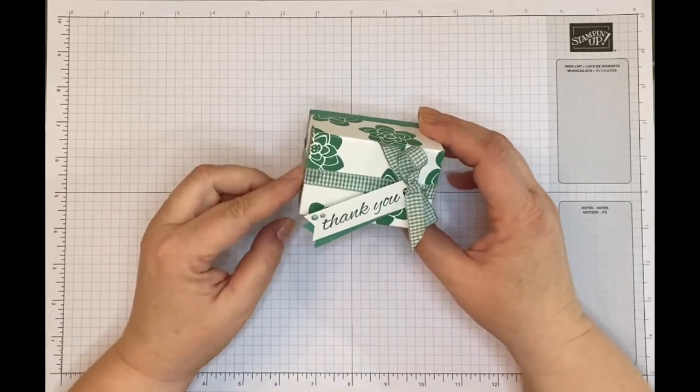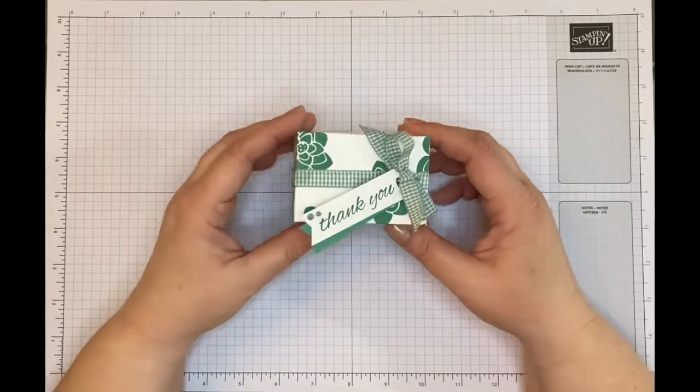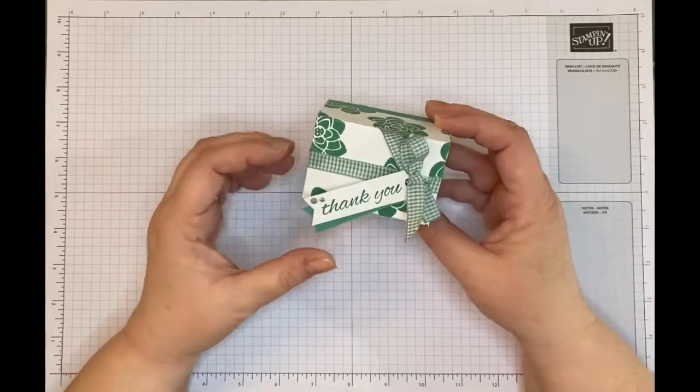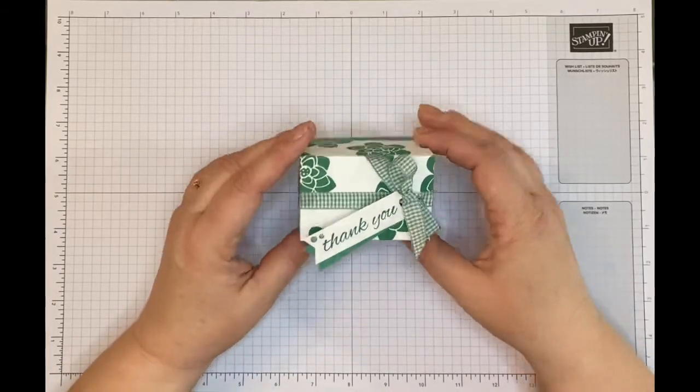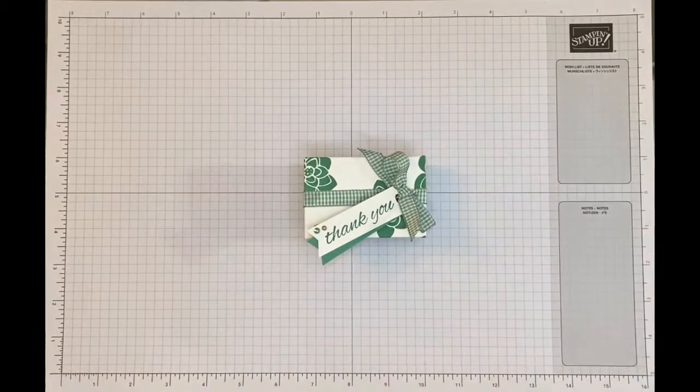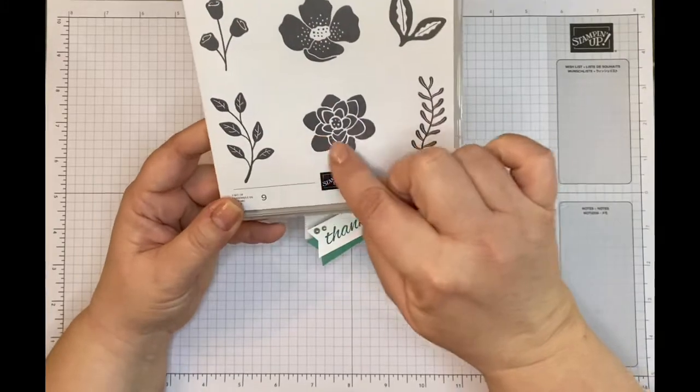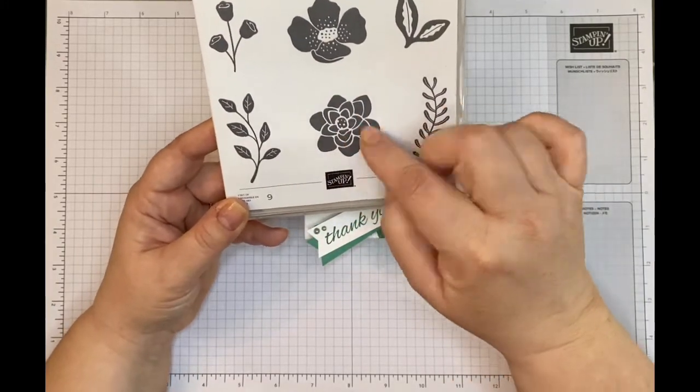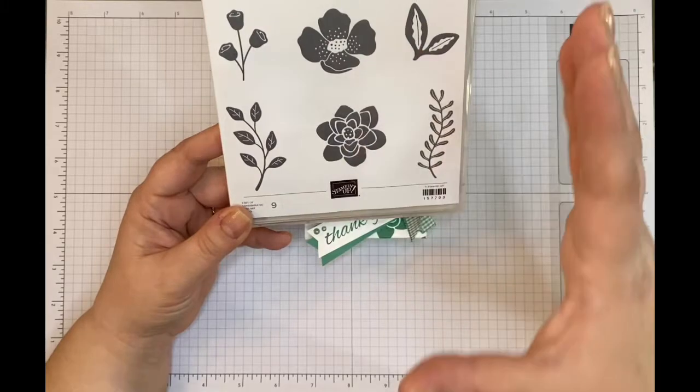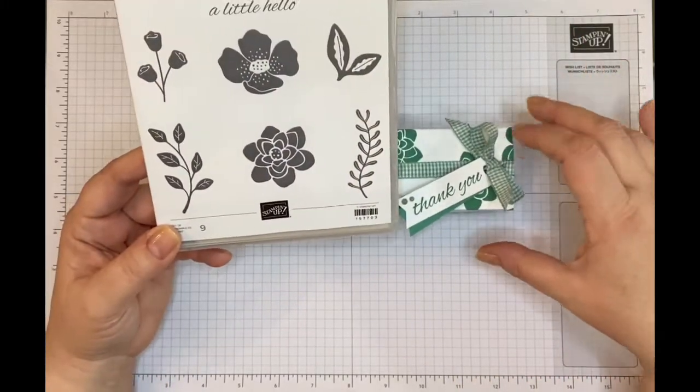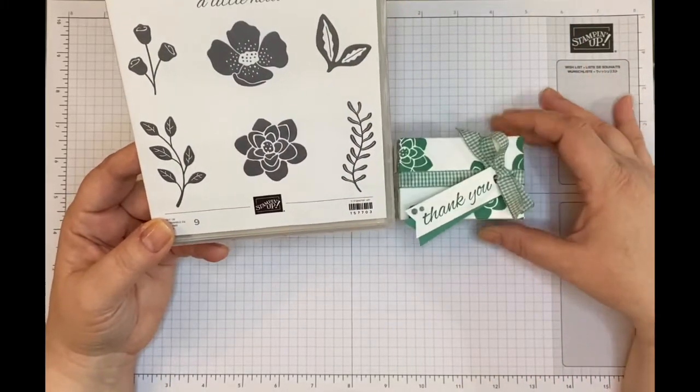I'm filming in a different room, so I apologize if you can hear some background noise from the traffic because I'm quite close to the road. I've used the stamp set Bows and Blossoms for this, which is lovely, and I've used this flower here as the main focus of my own DSP for the lid.